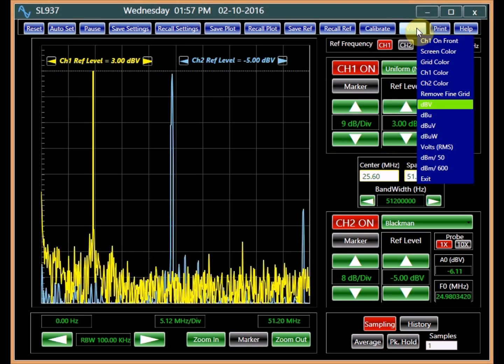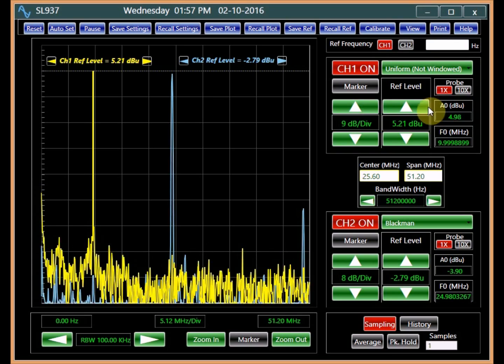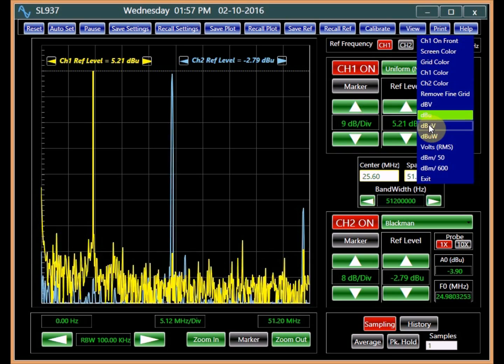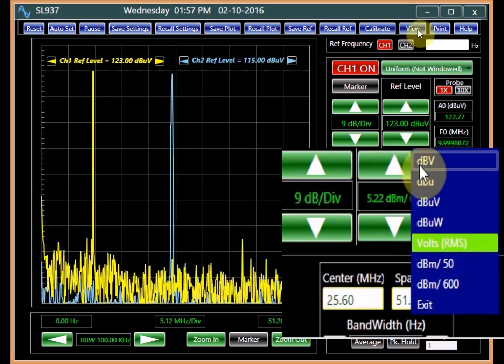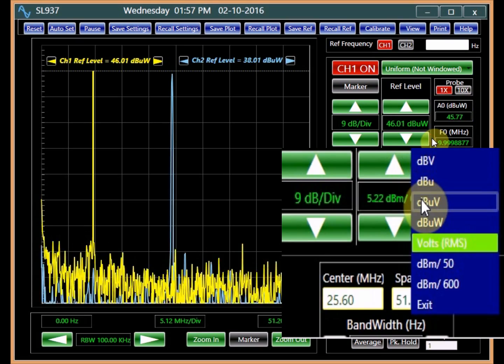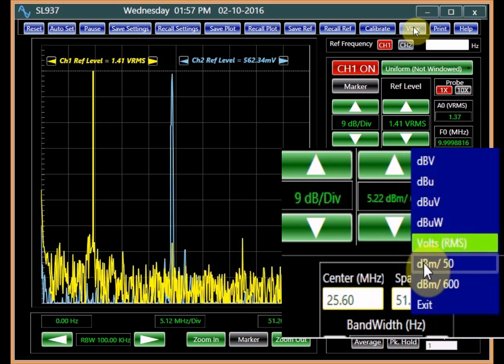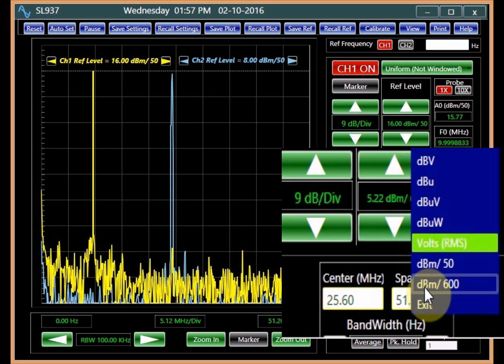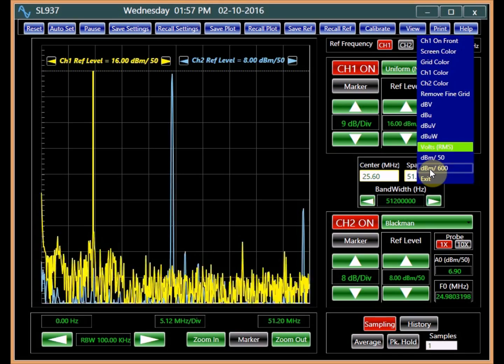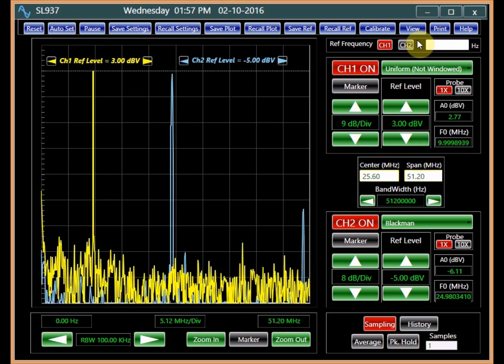Note that changing the vertical units of a spectrum analyzer has no effects on the display. Choosing between dBV, dBU, dBuV, dBuW, volts RMS, dBm 50 or dBm 600 is only a matter of the particular application in which the spectrum analyzer is being used.